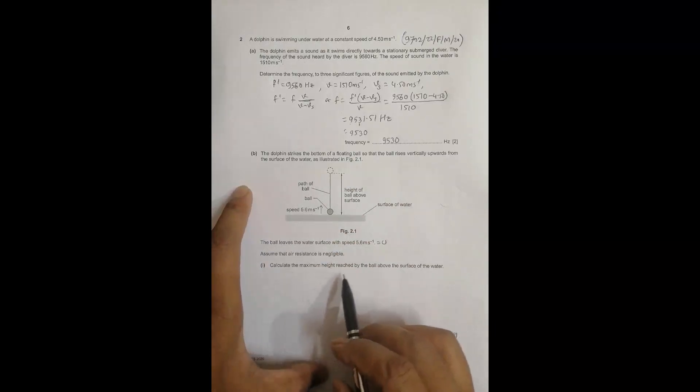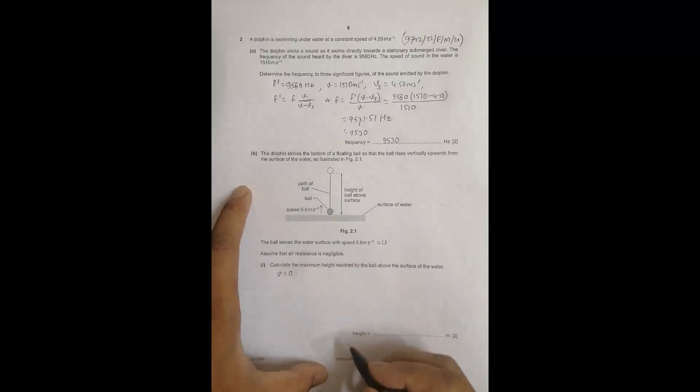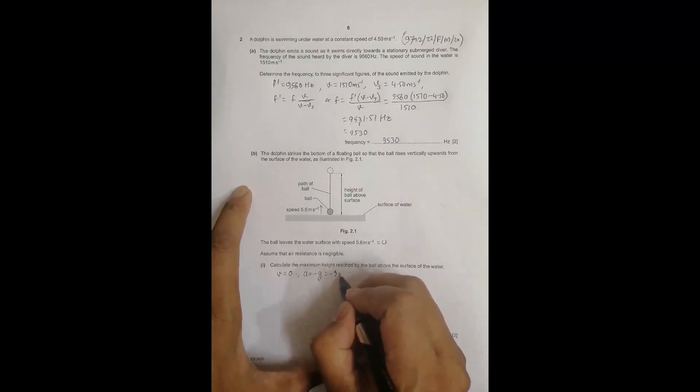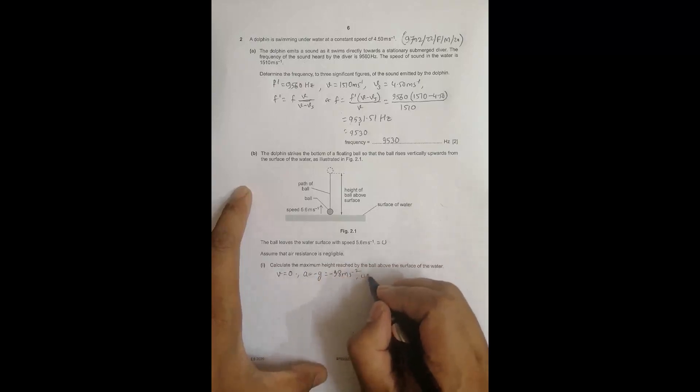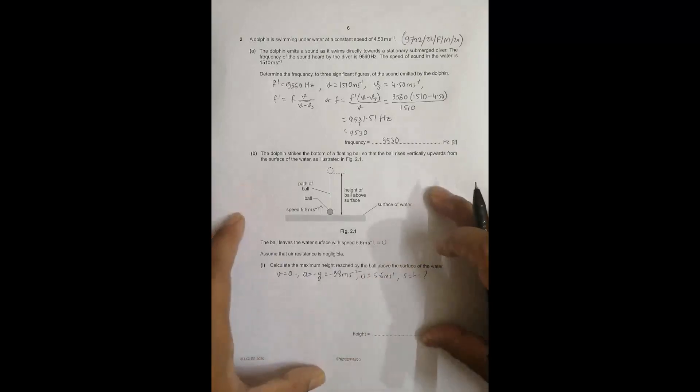We need to calculate the maximum height reached by the ball above the water surface. At the top of its motion, V equals 0, acceleration A equals minus g equals minus 9.8 m/s squared, U equals 5.6 m/s, and S equals H, which we need to find. S means displacement, which here equals height.